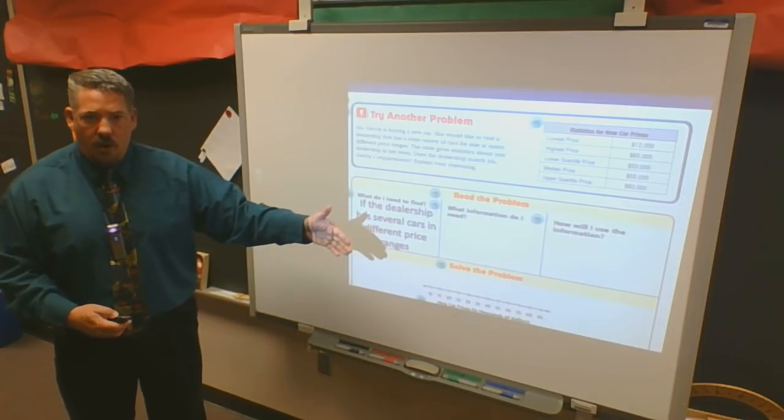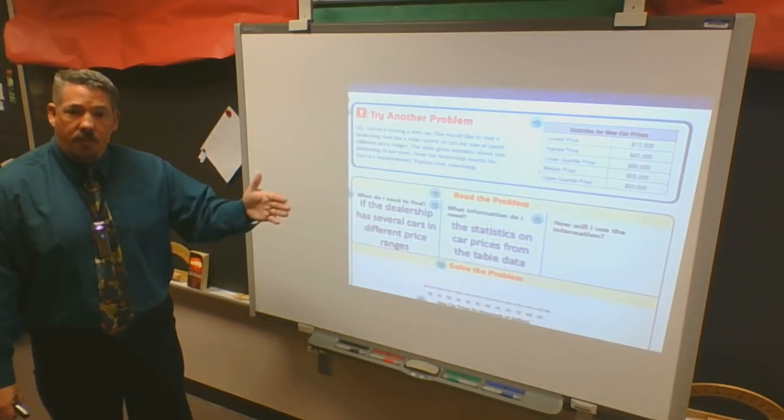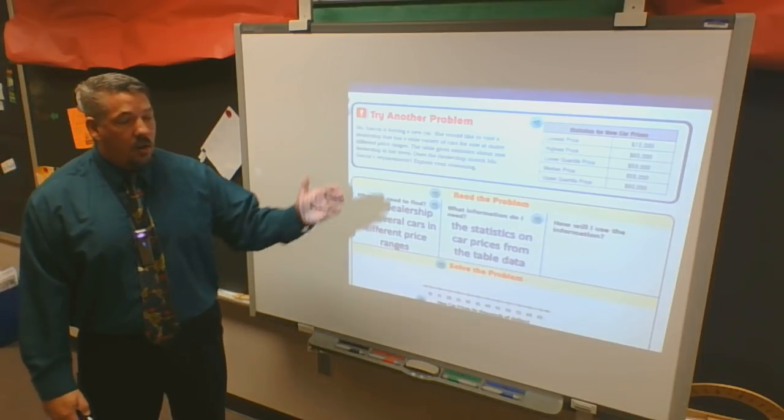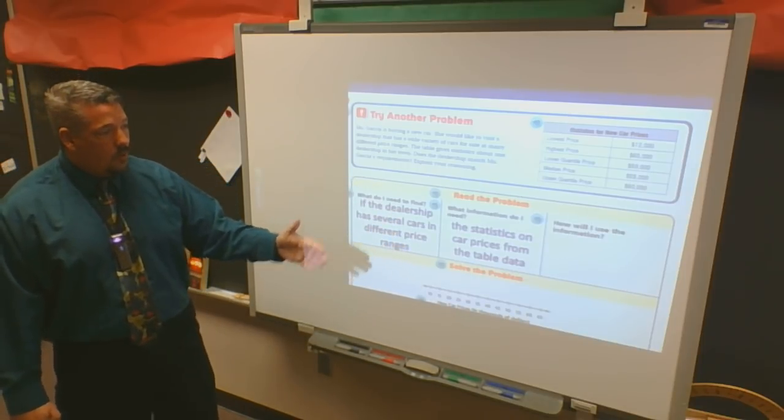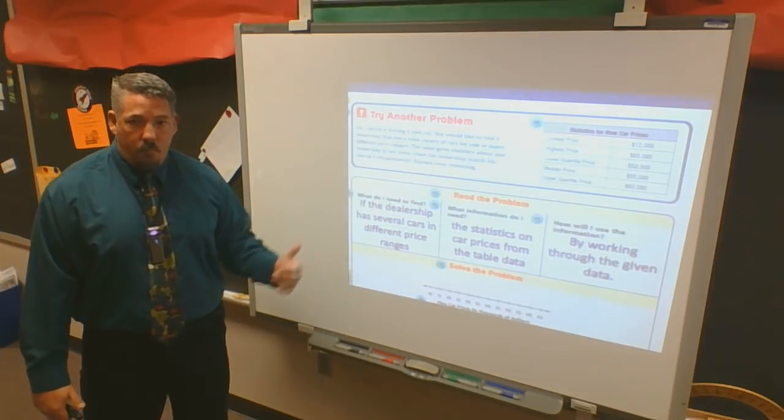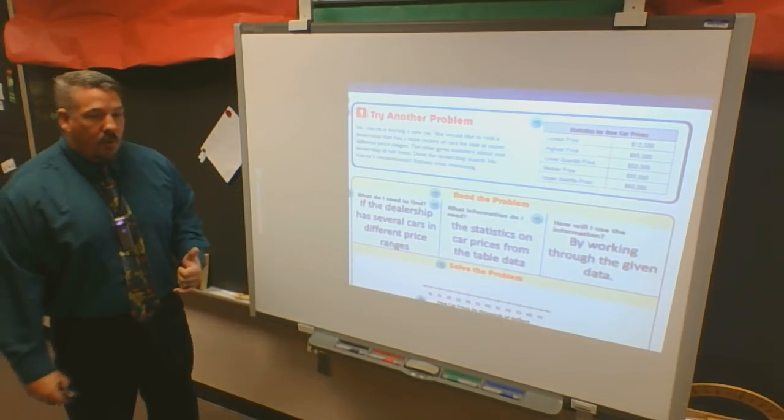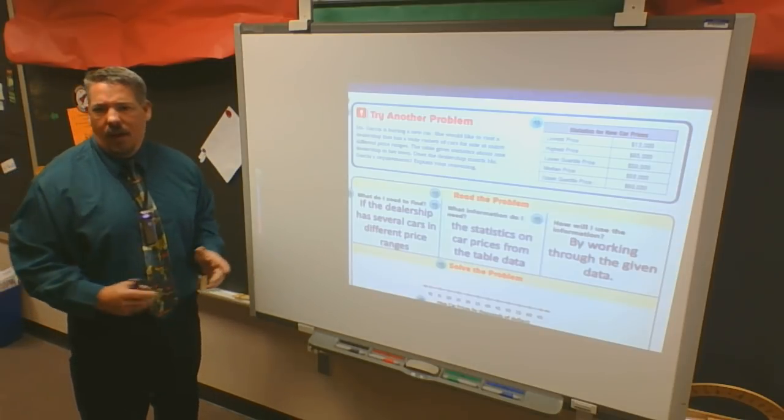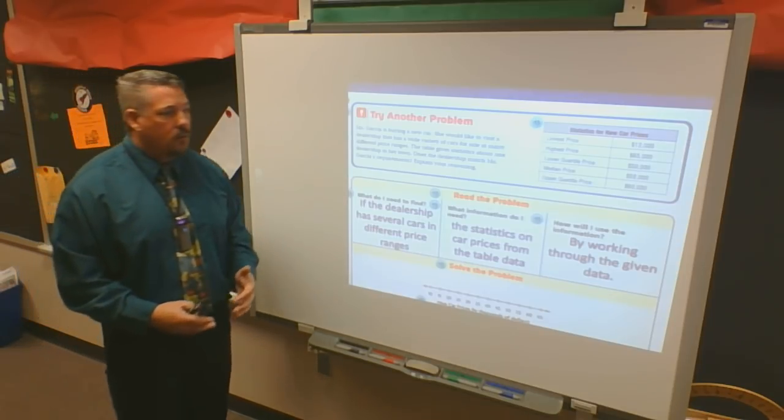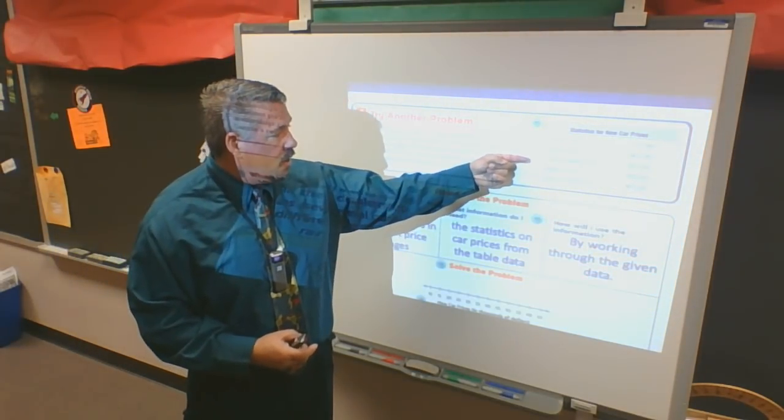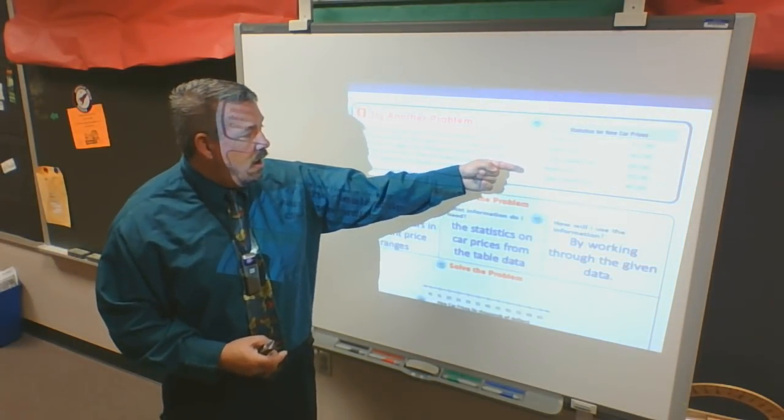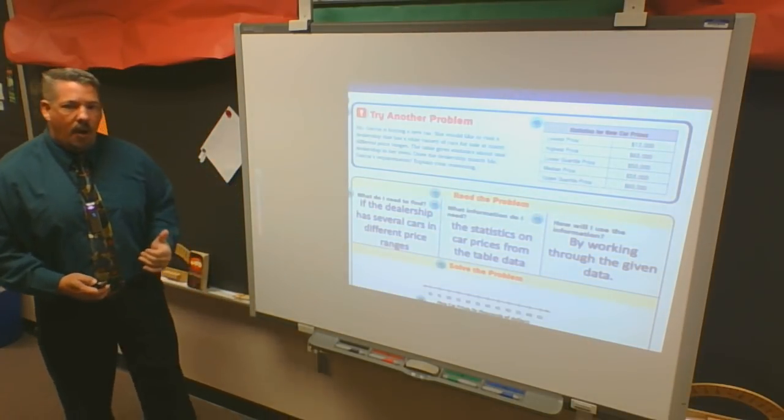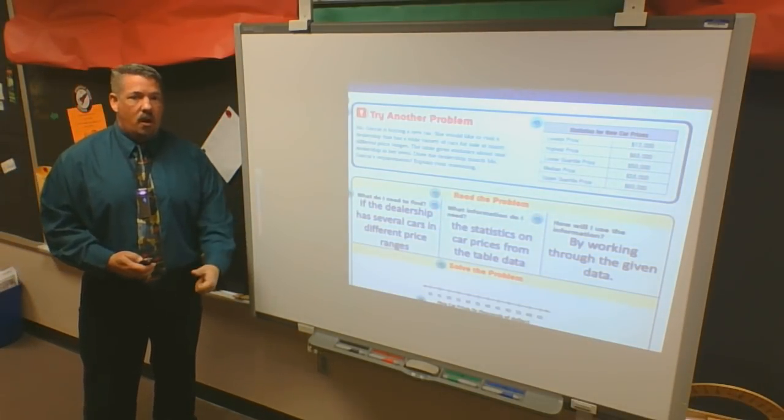What information do I need? I've got to use my statistics that I've given about that particular dealership. How am I going to use that information? Well, once again, I'm going to work backwards with that information, but I'm going to work through it, and I'm going to make a box plot. How do I know I'm going to make a box plot? Because the statistics they give me talk about lower quartiles, upper quartiles, and median prices. So I know if I use my box plot, I'll be able to see what we're talking about.